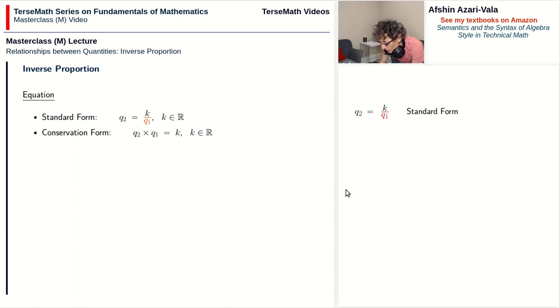We can go from the standard form to the conservation form by rearranging the equation. Here we take division by q1 on the right side and turn it into multiplication by q1 on the left side. The key to going to the conservation form is to isolate the k.